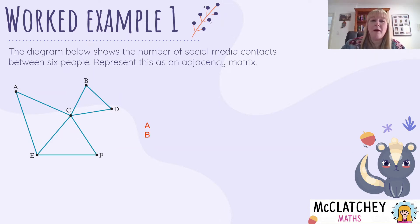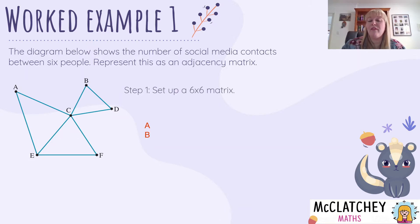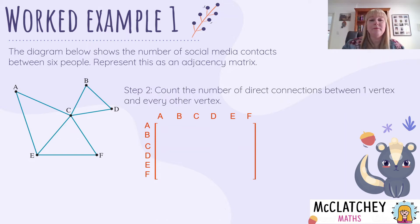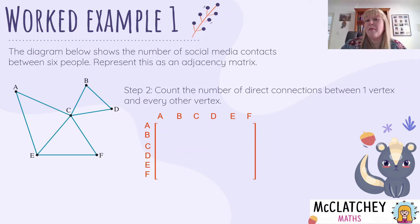Then you've got, for example, A sitting on the outside. They're friends with C, but also friends with E, but not friends with anybody else in the network. So we're going to represent that in a matrix. Our very first step is to set up that six by six matrix. You can see we've got this blank matrix now. It's simply a case of looking throughout our network and working out who has connections with who. We're going to count every one of those direct connections between what we call one vertex and every other vertex. A vertex just means those little dot points where you've got the letters.